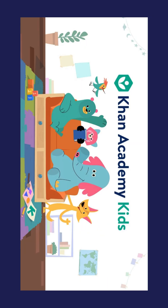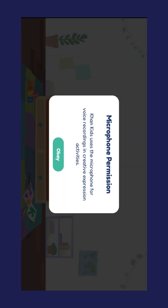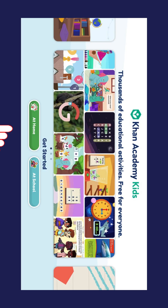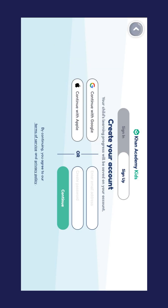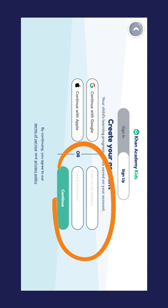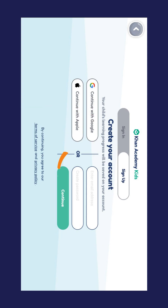Open the Khan Academy Kids app. When asked for microphone access, click OK. Click at home. If you already have a Gmail account, click on Continue with Google. If not, type in your email address and password.